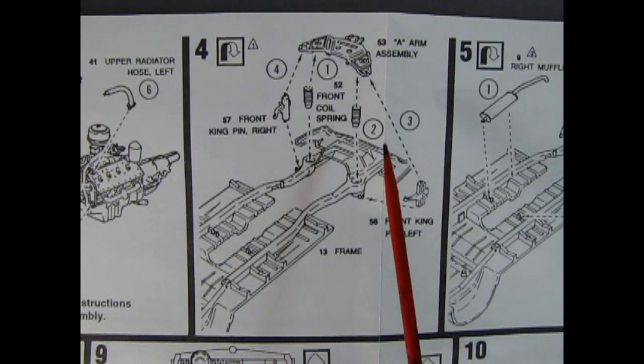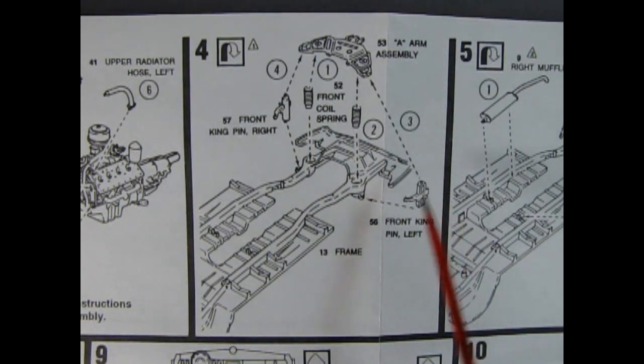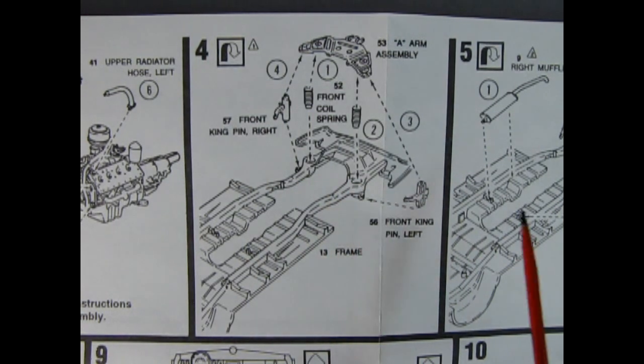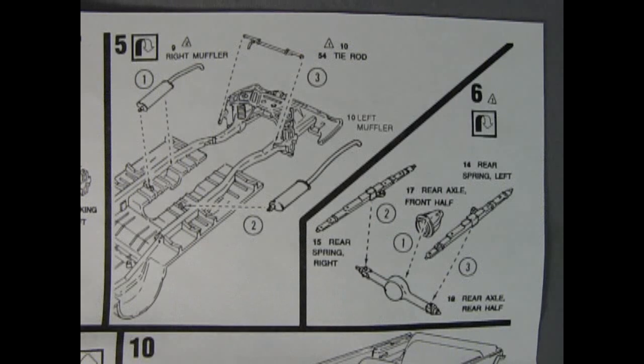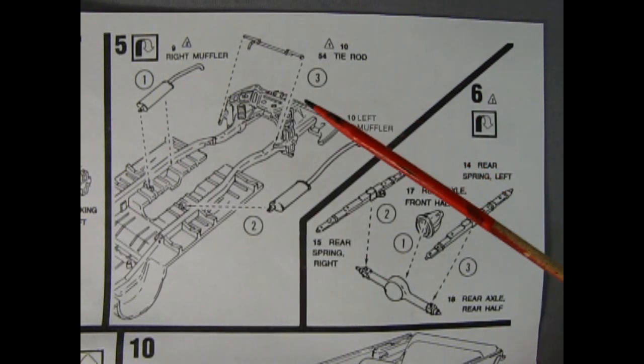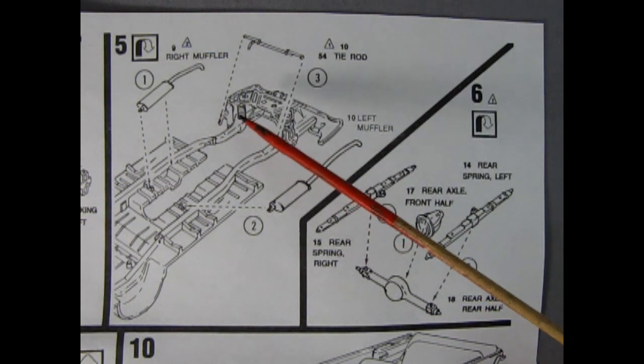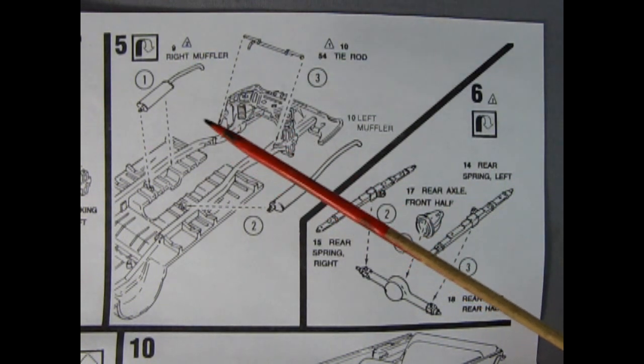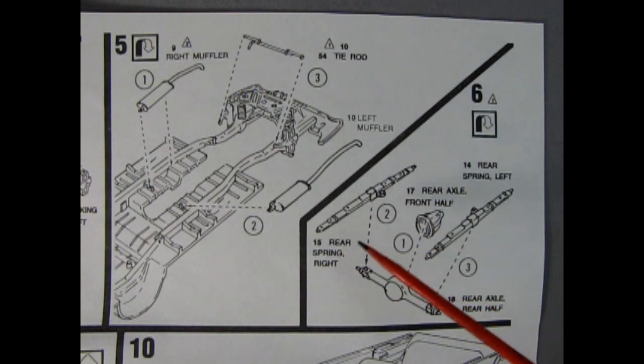Panel four shows our A-arm assembly being glued in place. The coil springs down below which fit into these pockets in the frame and then we've got our front kingpin left and right. It almost looks like we could make that front end steerable because we've also got a tie rod which goes onto the ends of the front kingpins. Then we've got our right and left hand side mufflers and here we've got our rear differential with the front half glued in and then we've got these nice long leaf springs that glue all together as well.